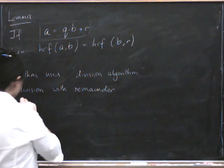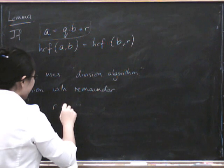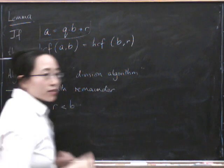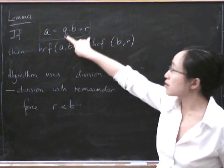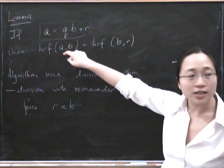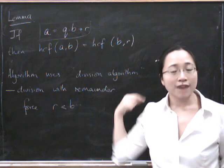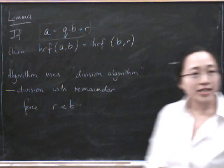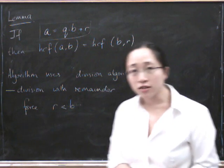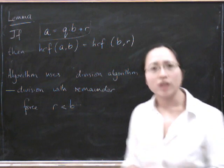So you can always get, so you force R to be strictly less than B. So that means that when you perform this algorithm repeatedly, the numbers that you're interested in will get definitely smaller and smaller and smaller. So that means that the algorithm will have to get easier because your numbers are getting smaller. There is a rigorous proof that this algorithm really works and terminates, but I think we'll leave that for another time.